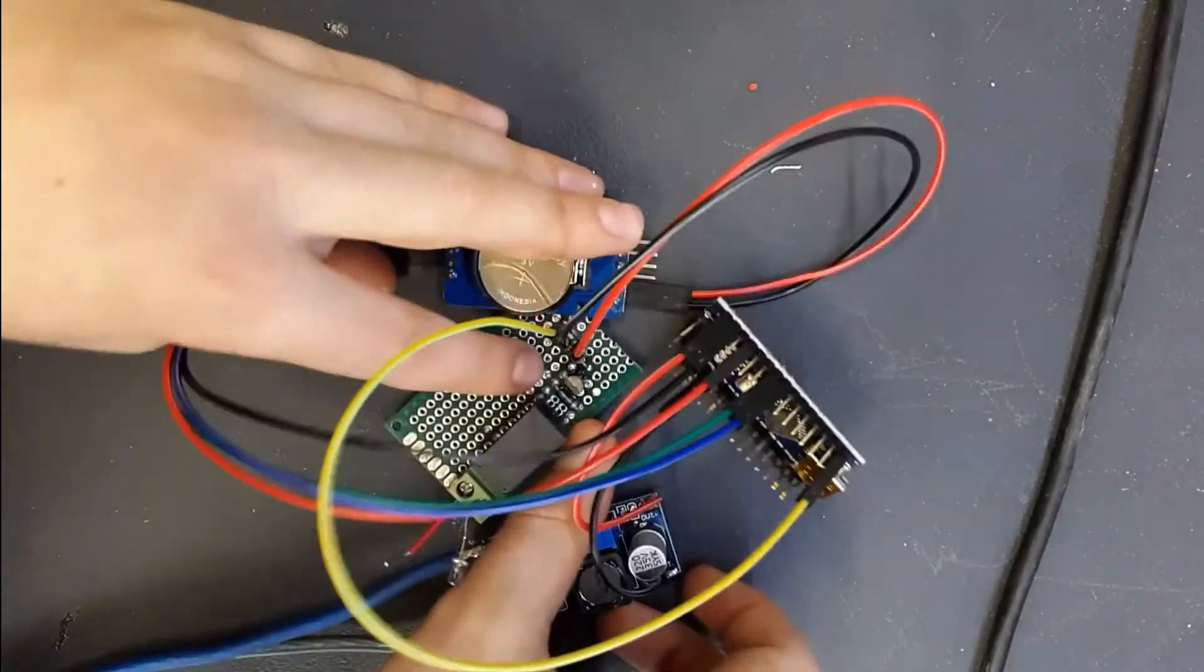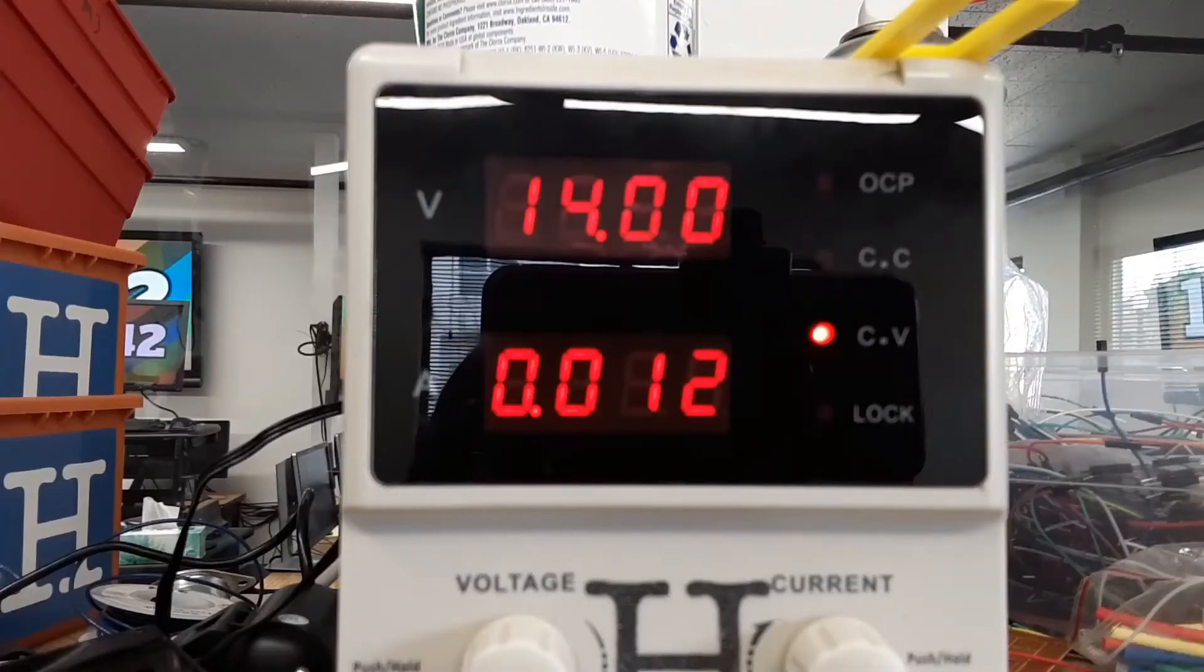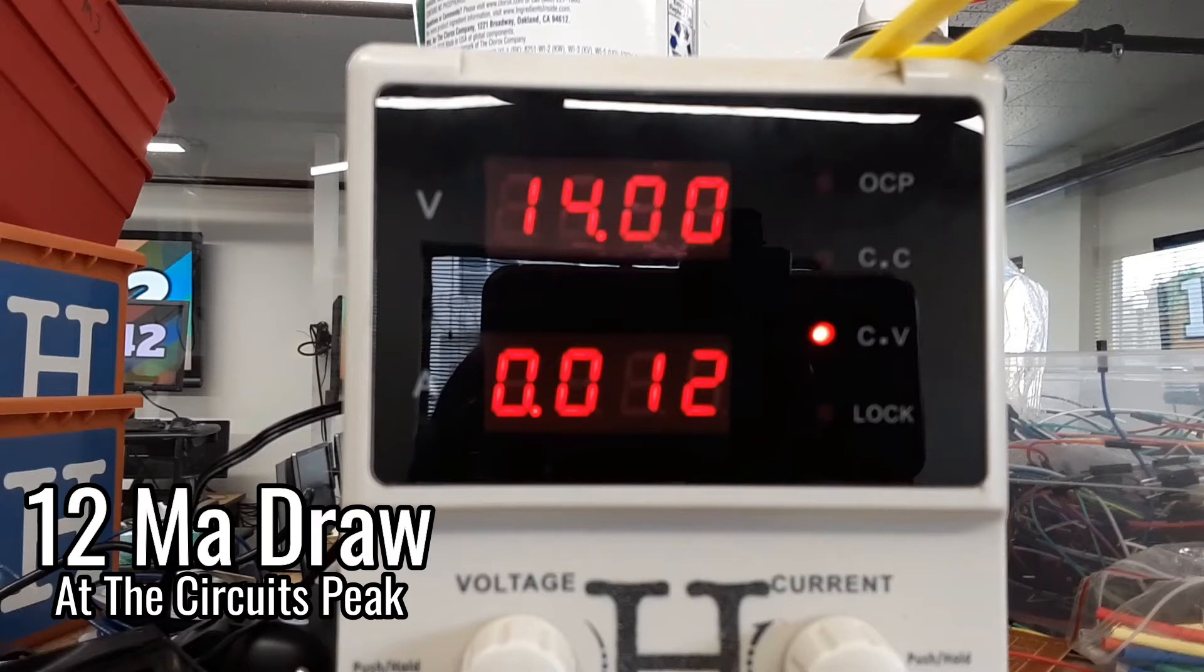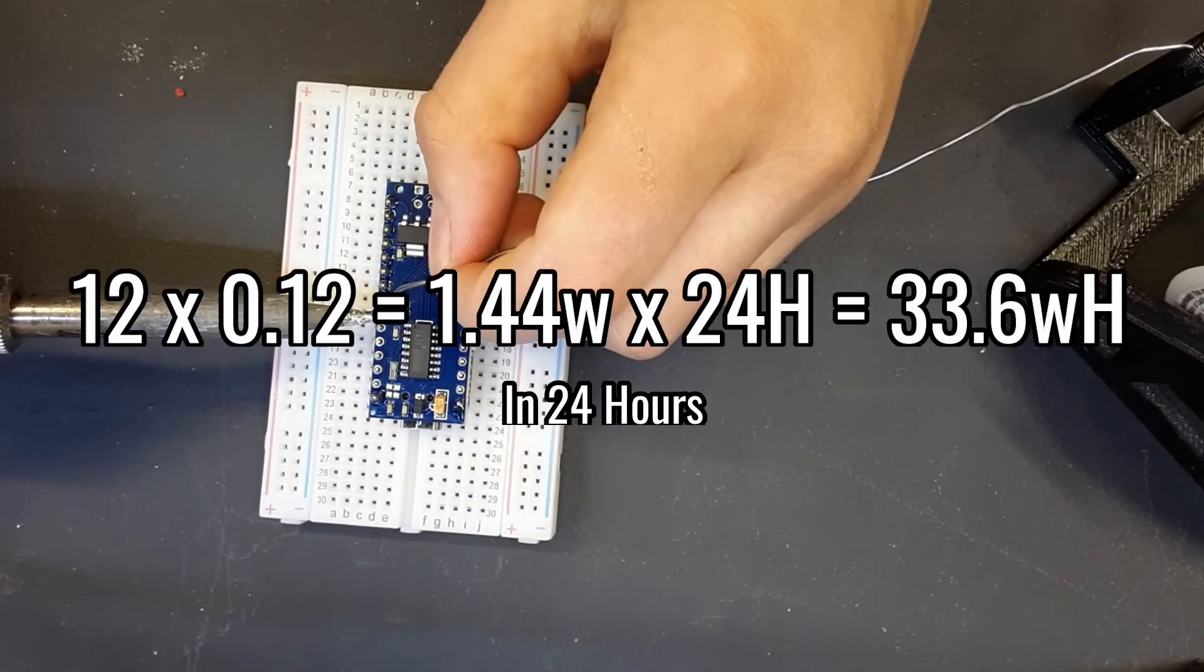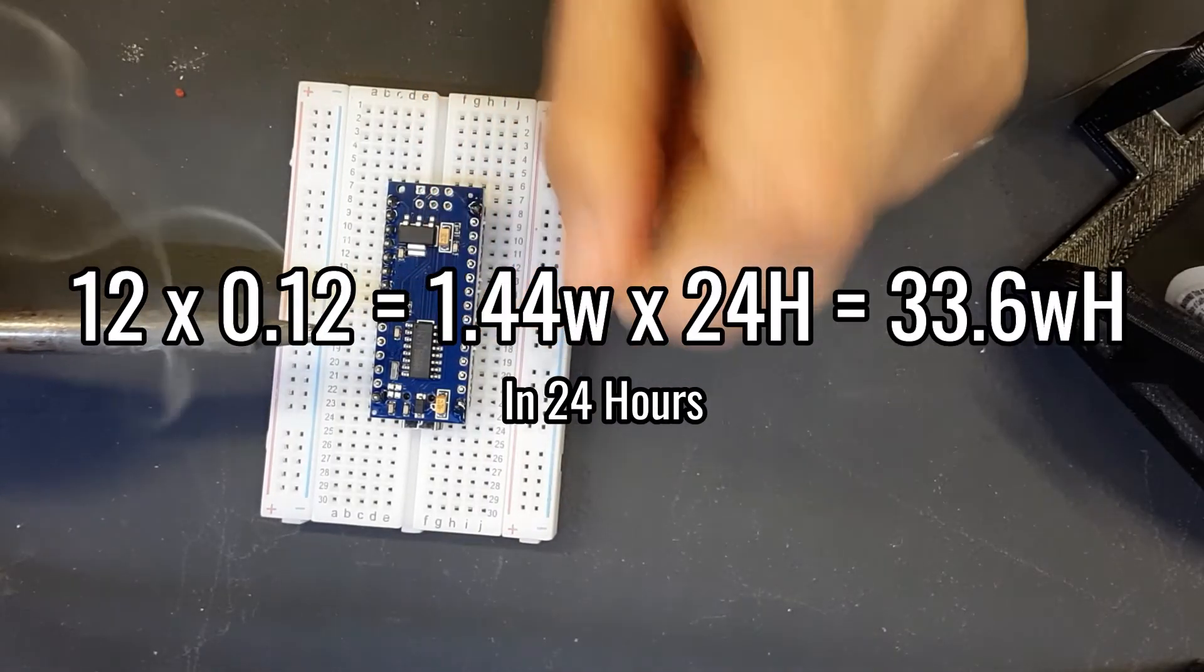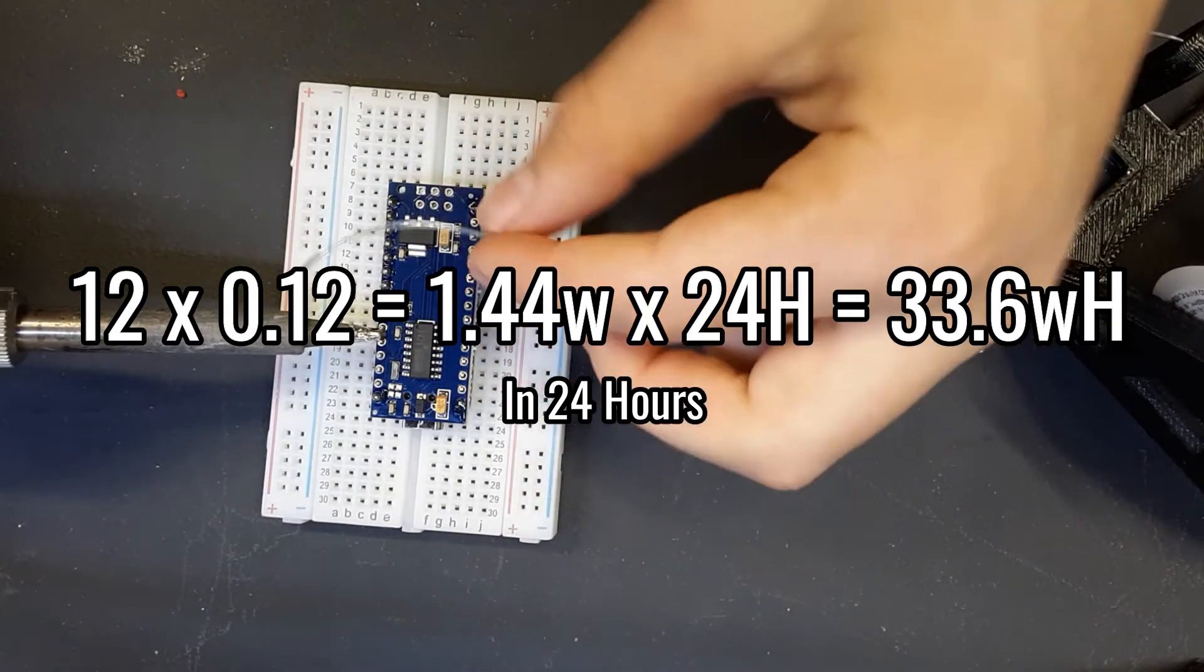Now that the circuit was all hooked up, I can now measure how much power the circuit draws. At its peak, the circuit draws 12 milliamps. And this is when I realized how much power the circuit really draws. After some basic measurements and calculations, I realized that this circuit will use half of a 10 amp hour battery in just 36 hours.